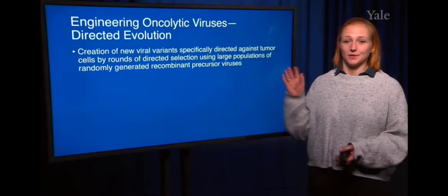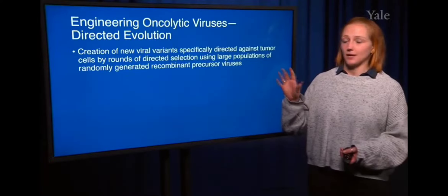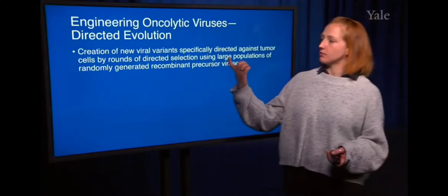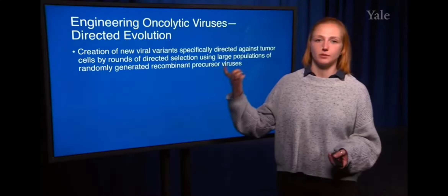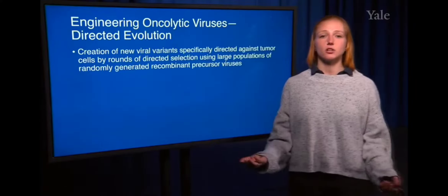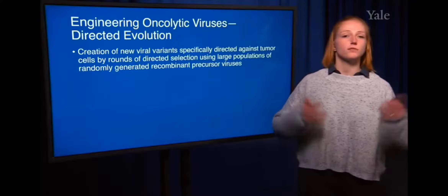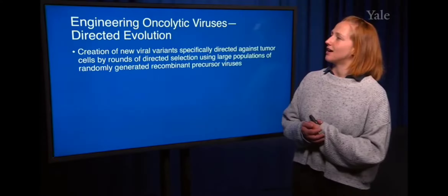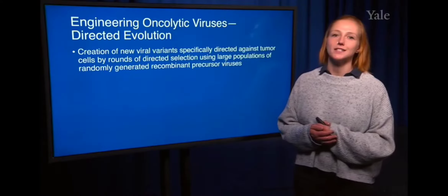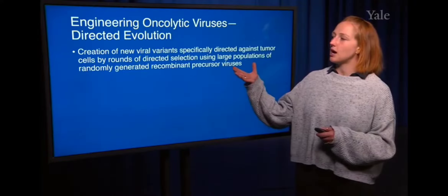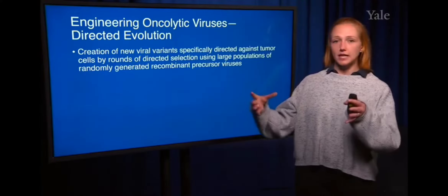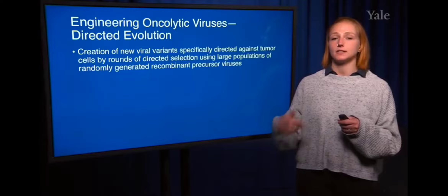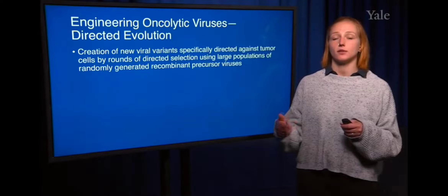What this means is you start with recombinant precursor viruses. You can start off with your favorite lytic virus, put it in a population of cancer cells, and then specifically select viruses that are the best at killing a certain population of cancer cells.